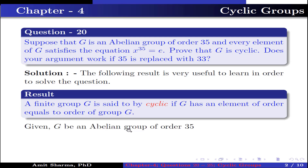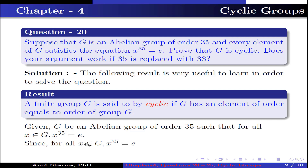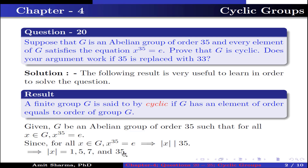Given G be an abelian group of order 35 such that for all x in G, x to the power 35 is equal to identity. Since x to the power 35 equals identity, this implies the order of x divides 35. Therefore the possible orders for x are 1, 5, 7, and 35.